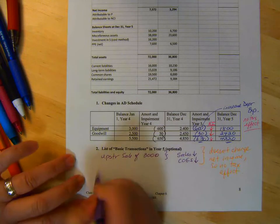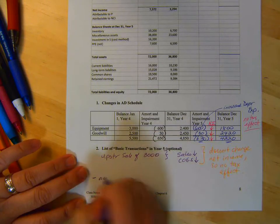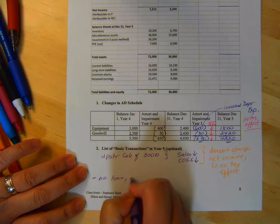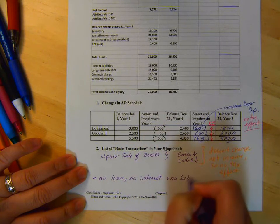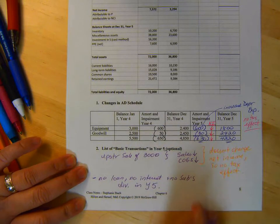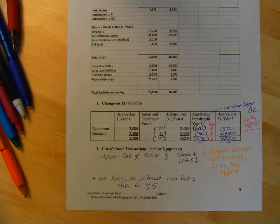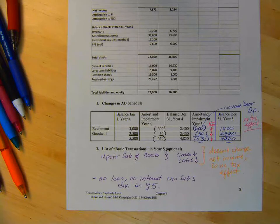And I'm just going to make a note so later when you're looking back it makes sense. There was no loan, no interest, and no sub's dividend in Year 5. But those are the kinds in which you're going to look for.